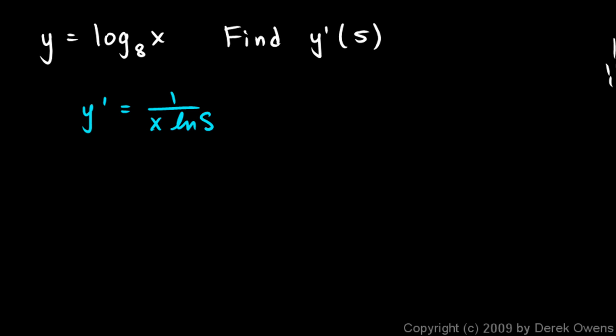over x times the natural log of 8. So y prime of 5 is going to be 1 over 5 times the natural log of 8. That's it. If you need an actual number, you can put that into the calculator, and it's approximately 0.0962.